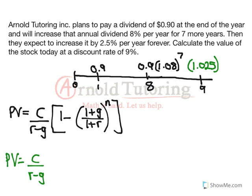So a lot of things happening. We've got our discount rate of 9% — we're going to use that to pull cash flows back. We've got our increasing dividend, so right there we should be thinking about our growing annuity formula. We've also got an increasing dividend going on forever, so that's going to be our growing perpetuity formula.